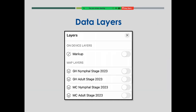Under map layers, there are four Grasshopper and Mormon Cricket layers with their survey stages: Grasshopper nymphal, Grasshopper adult, Mormon Cricket nymphal, and Mormon Cricket adult — all defaulted to off. There is also a markup layer, which is a feature of ArcGIS Field Maps present on every map. It is not an official data collection layer and lives only on your device. Don't use it for official data collection.